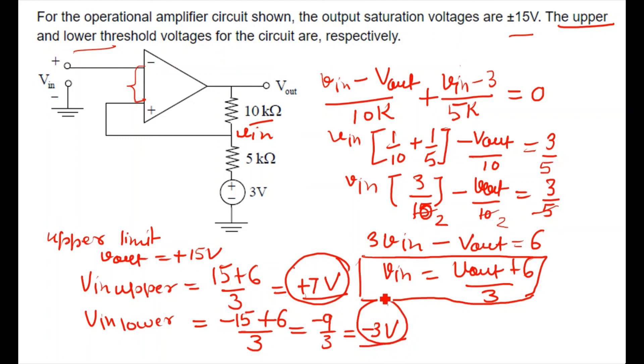This is your upper threshold voltage and this is your lower threshold voltage. So you finally got the upper threshold and lower threshold voltage for the circuit. So this is the explanation for this one. If you like this explanation, please like and subscribe my channel and share with your friends.